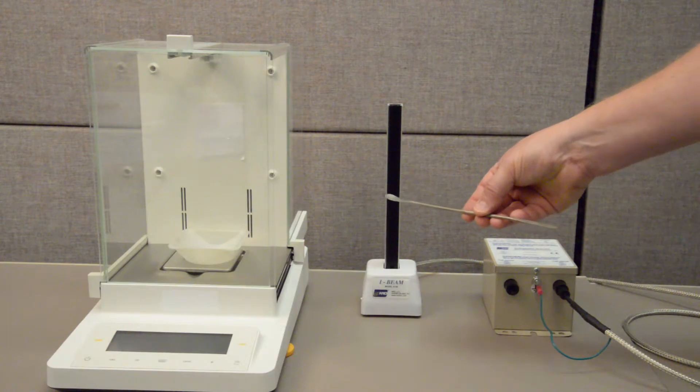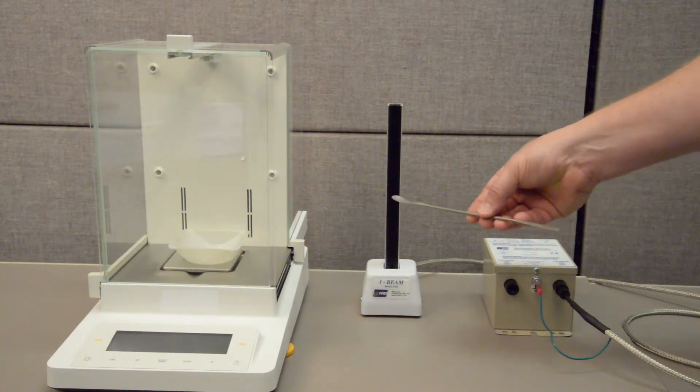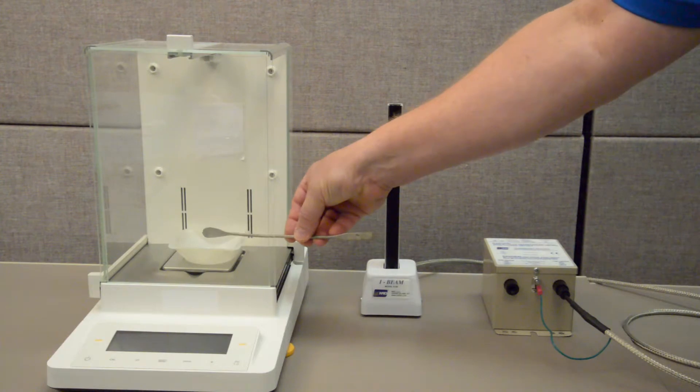The I-beam can also be used to remove static charge from powders by passing the sample in front of the I-beam for a moment before transferring it.